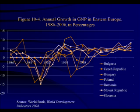This drop also happened in the other former allies of the Soviet Union — primarily East European countries: Bulgaria, Czech Republic, Hungary, Poland, Romania, Slovak Republic, and Slovenia. Interestingly, their turnaround occurred considerably earlier than it did in the Russian economy, partly because they made the transition more easily — and I'll talk about why in a minute.